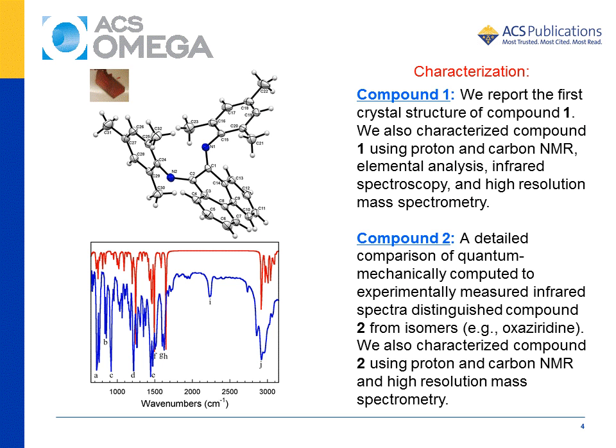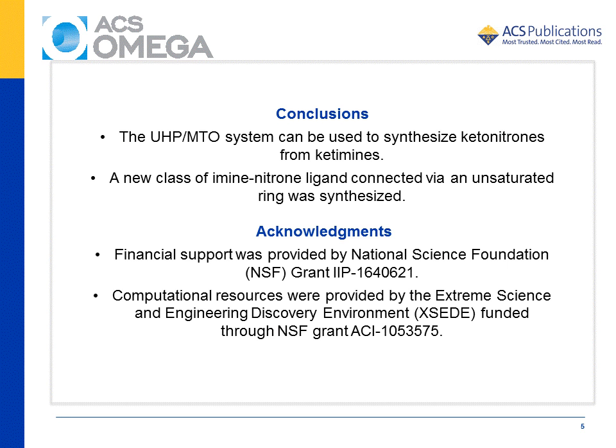Each peak was assigned to a particular vibration by animating the calculated vibration modes. Comparing the calculated to experimental infrared spectrum was crucial to distinguishing compound 2 from its isomers. In summary, the UHP-MTO system can be used to synthesize ketone nitrones from keto imines. A new class of imine nitrone ligand connected via an unsaturated ring was synthesized.